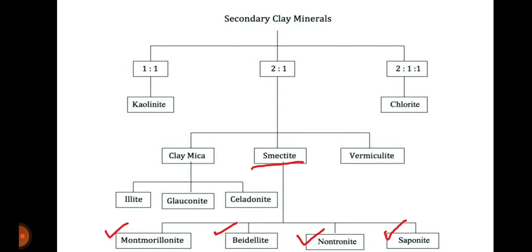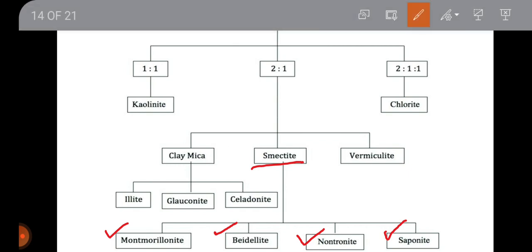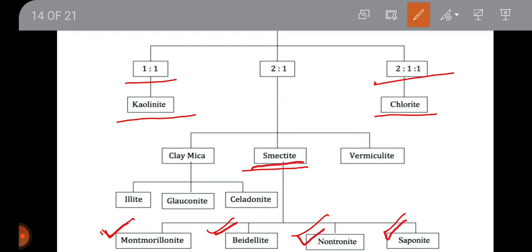Secondary clay minerals are divided into three groups: 1:1, 2:1, and 2:1:1. Kaolinite belongs to the 1:1 type, chlorite belongs to the 2:1:1 type, and the smectite group belongs to the 2:1 type. Examples of smectite group minerals are montmorillonite, beidellite, nontronite, and saponite.